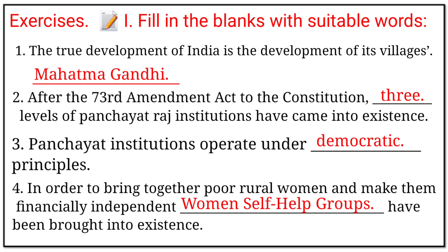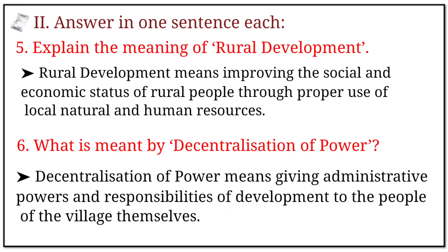1. The true development of India is the development of its villages — answer: Mahatma Gandhi. 2. After the 73rd Amendment Act to the Constitution, three levels of Panchayat Raj institutions came into existence. 3. Three Panchayat institutions operate under democratic principles. 4. In order to bring together poor rural women and make them financially independent, women self-help groups have been brought into existence.